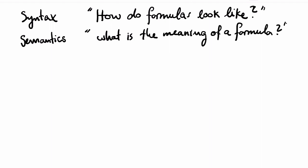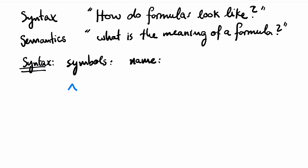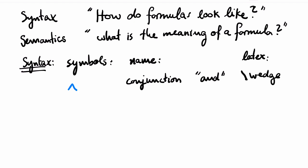To explain the syntax of propositional logic, I will first show you the symbols that we need. First of all, we have the symbol for conjunction, pronounced AND. It looks like a little hat, and you can produce it in LaTeX by writing backslash wedge. LaTeX is the software you want to use to produce nice-looking solutions to your homework exercises, and that I used to write the course notes.